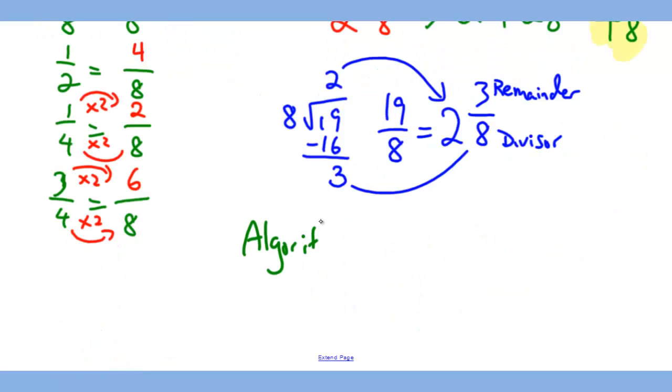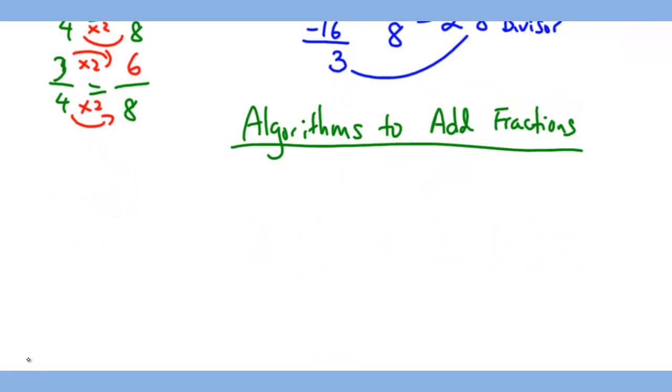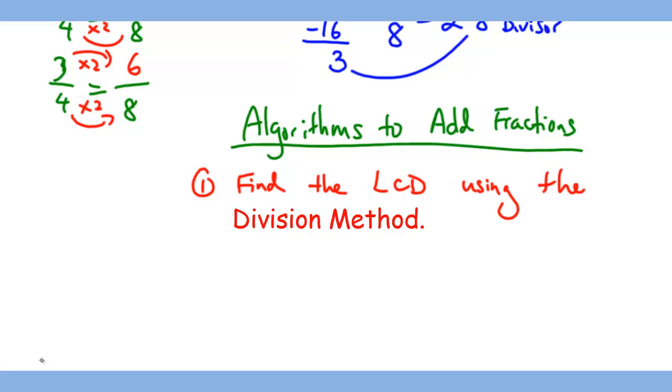To wrap up this lesson let's write down the steps that we have gone through to solve the two questions. The first thing we should do is find the lowest common denominator using the division method. And then you have to convert all the fractions into the same denominator based on the LCD.